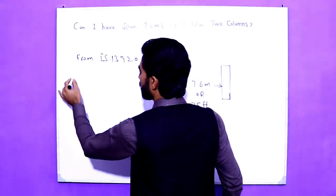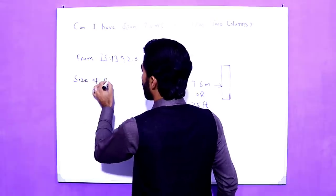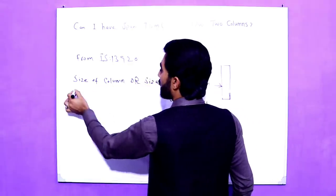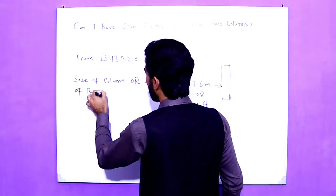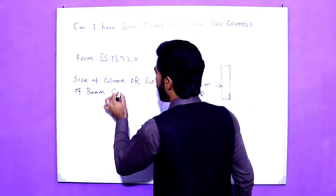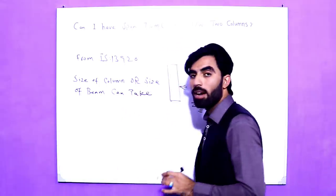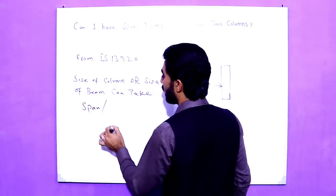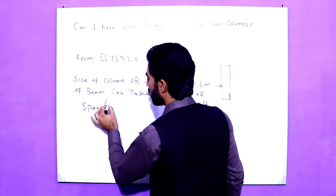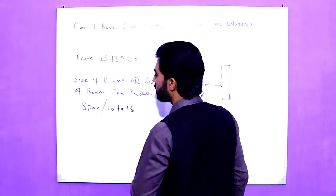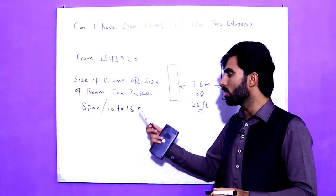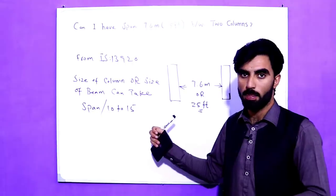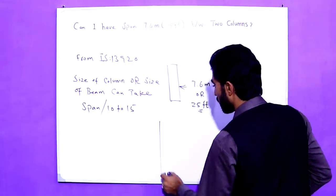From IS 13920 code, the size of column or size of beam can be taken using the formula: span divided by 10 to 15. Using this formula we can find the size of beam and column.